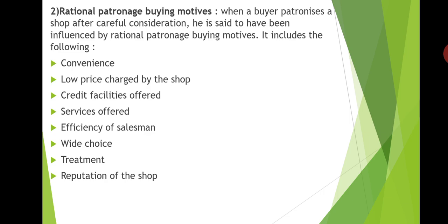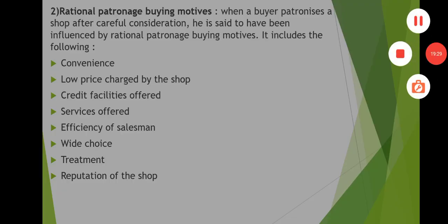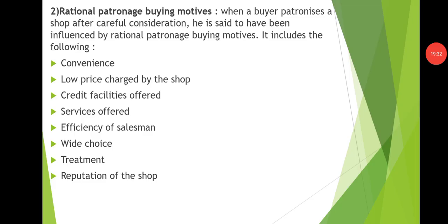The second type is rational patronage buying motive. When a buyer patronizes a shop after careful consideration — that is, after much logical reasoning and careful thinking — he is said to have been influenced by rational patronage buying motive. Rational patronage buying motive includes the following: convenience, low price charged by the shop, credit facilities offered, services offered, efficiency of salesman, wide choice, treatment, and reputation of the shop.